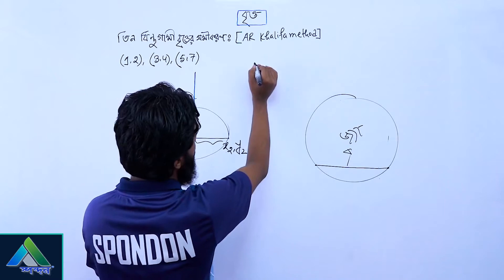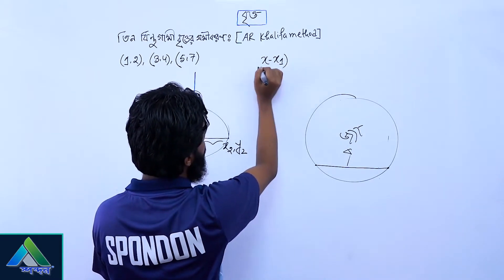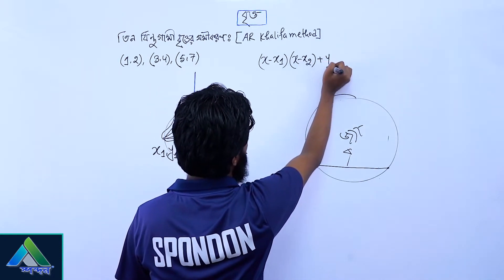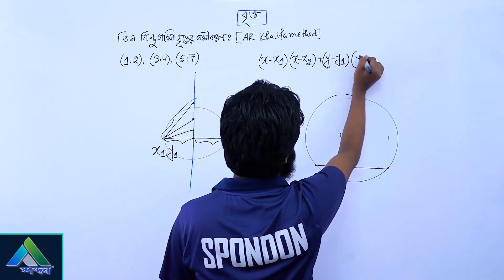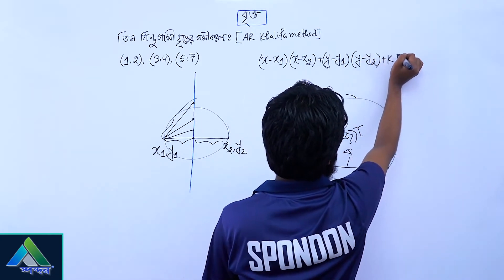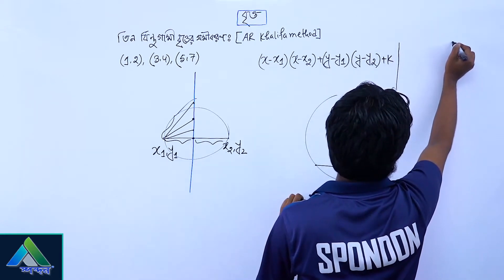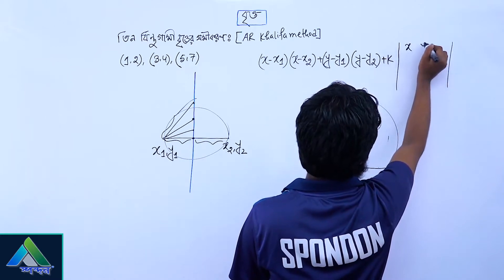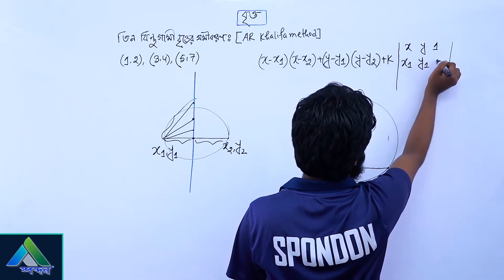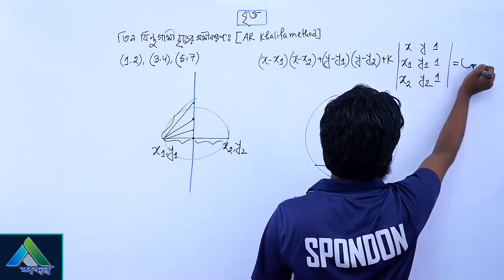So this is the method: x minus x1, into x minus x2, plus y minus y1, into y minus y2, plus k into the determinant of x, y, 1 over x1, y1, 1 over x2, y2, 1, equal to 0.